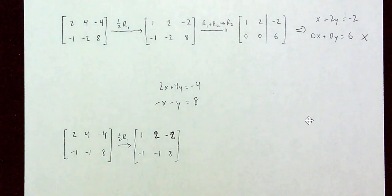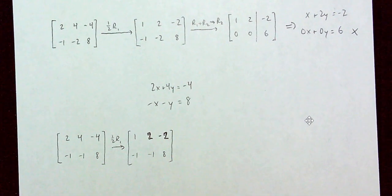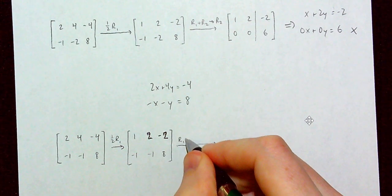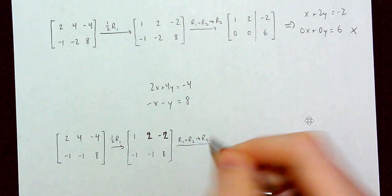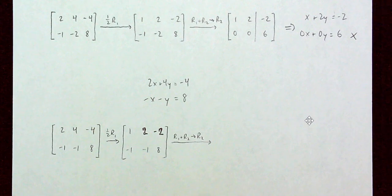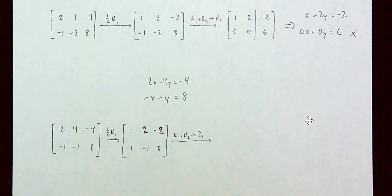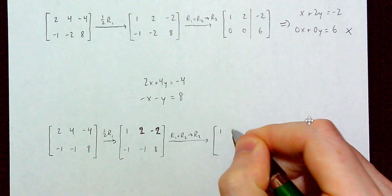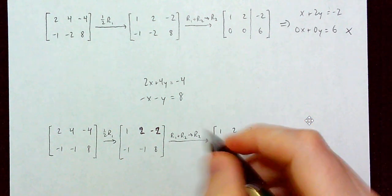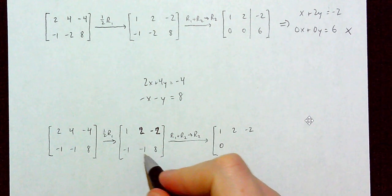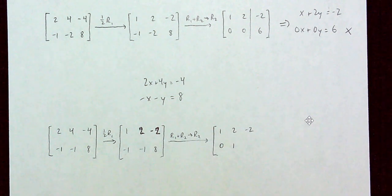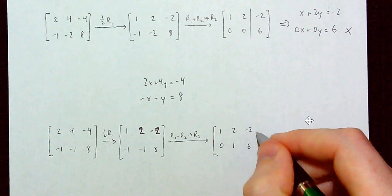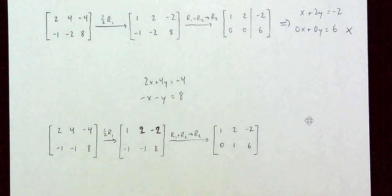Now I do the same operation: row 1 plus row 2 becomes my new row 2. So: negative 1 plus 1 is 0; 2 plus negative 1 is 1; and negative 2 plus 8 gives 6. Row 1 remains as 1, 2, negative 2.